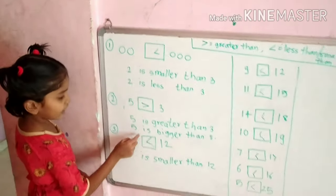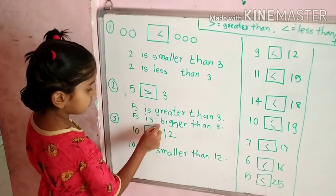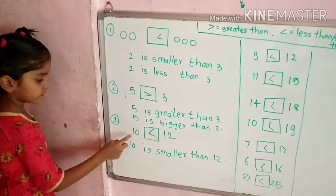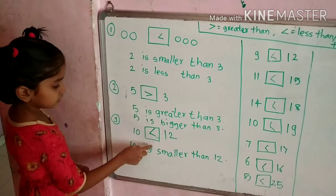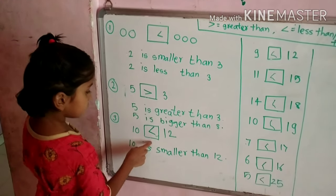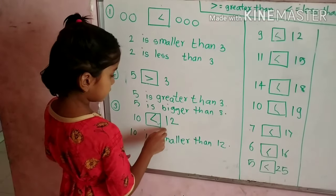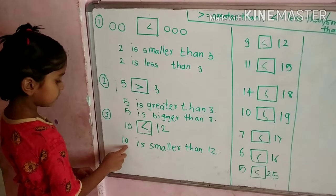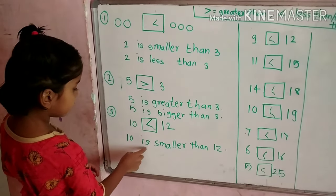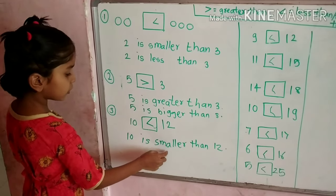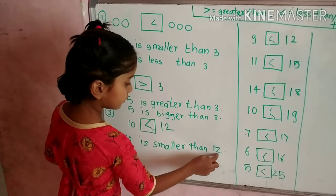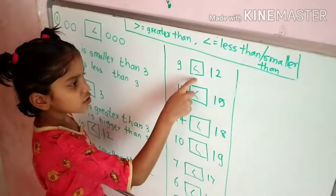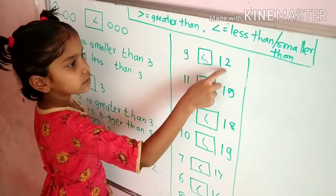5 is bigger than 3. 10 is smaller than 12. 9 is smaller than 12.